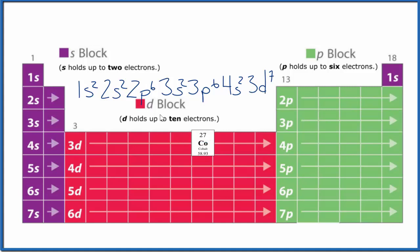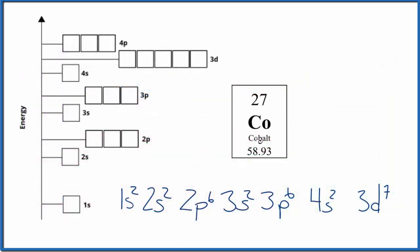Let's use this to write the orbital diagram for cobalt. So here's our orbital diagram notation. And all we're trying to do with both of these things is describe where the electrons are around the cobalt nucleus.